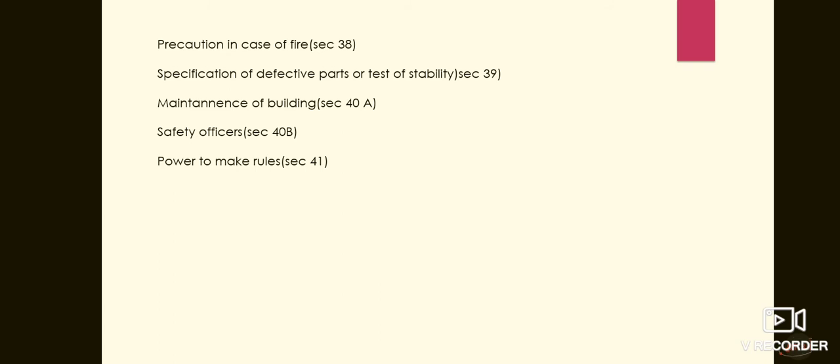Next is specification of defective parts or test of stability, discussed in session 39. If the inspector has identified that any building or part of a building, machinery or plant in a factory is in a condition dangerous to human life, he may serve on the occupier and manager an order in writing requiring submission of requisite details including test results of the defective part within a specified date.